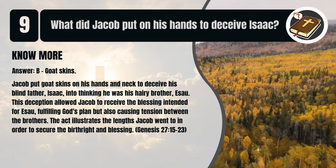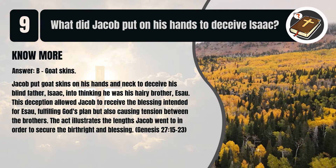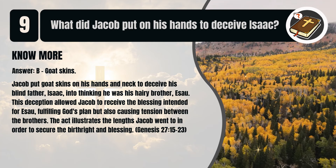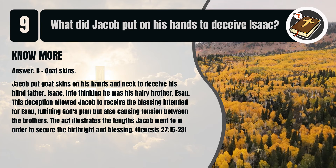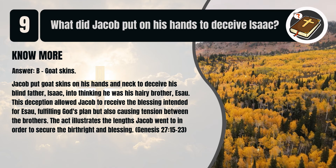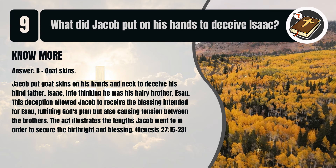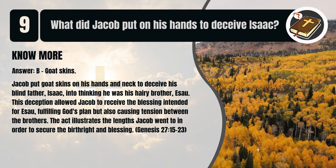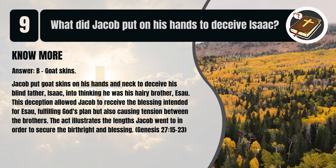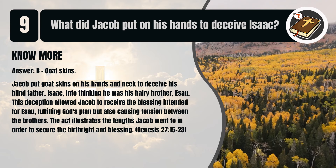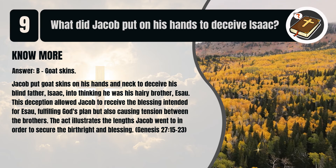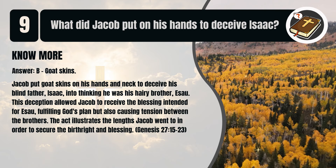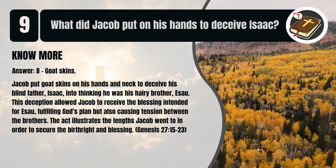That's B. Goat skins. Jacob put goat skins on his hands and neck to deceive his blind father Isaac into thinking he was his hairy brother Esau. This deception allowed Jacob to receive the blessing intended for Esau, fulfilling God's plan but also causing tension between the brothers. The act illustrates the lengths Jacob went to in order to secure the birthright and blessing. Genesis chapter 27 verses 15 to 23.